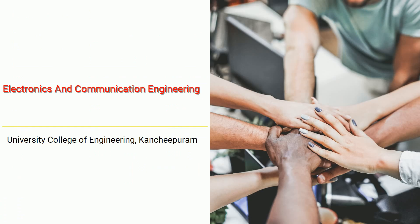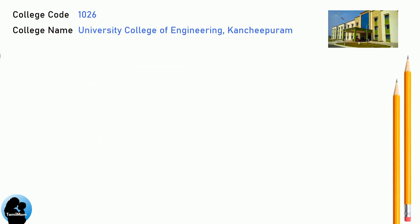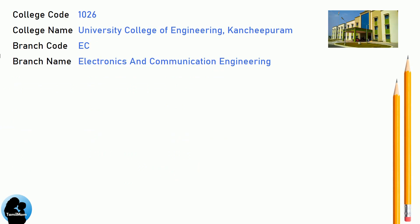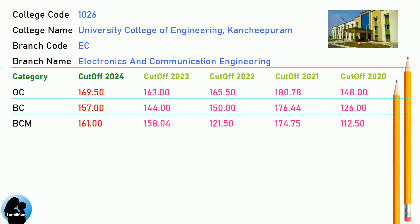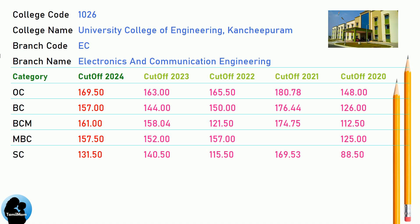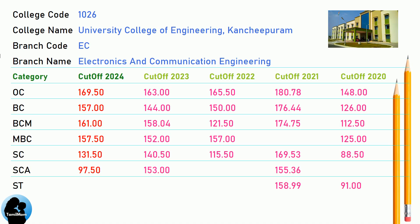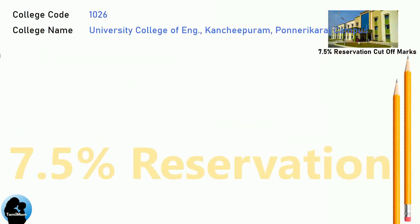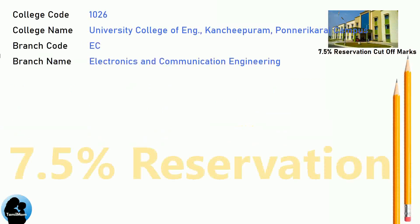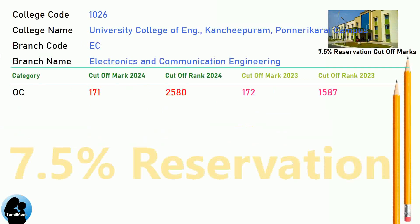DNA Cut-Off for University College of Engineering, Kanchipuram in Electronics and Communication Engineering. DNA 7.5 Reservation Cut-Off for University College of Engineering, Kanchipuram in Electronics and Communication Engineering.